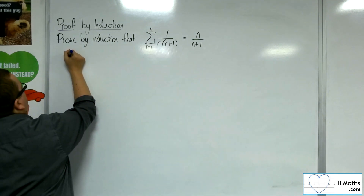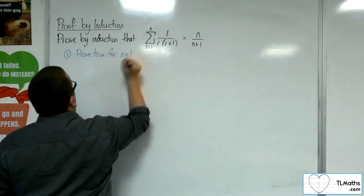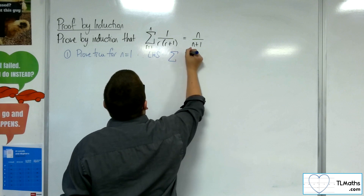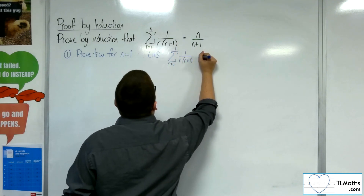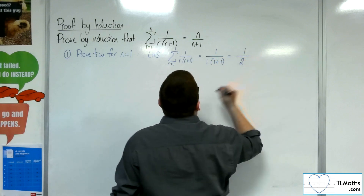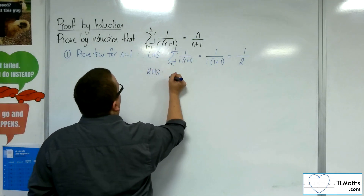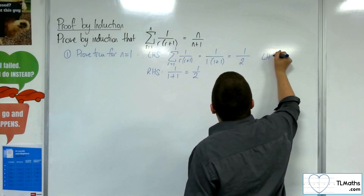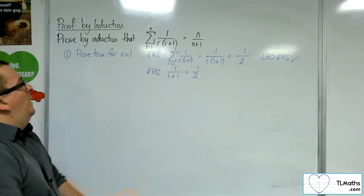Step number 1: prove true for n equals 1. Looking at the left hand side, the summation of 1 over r times r plus 1 from r equals 1 to 1 is just 1 over 1 times 1 plus 1, which is 1 over 2. The right hand side is 1 over 1 plus 1, which is also 1 over 2. So the left hand side equals the right hand side, and it is true for n equals 1.